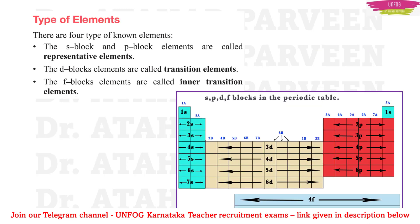As discussed in a basic chemistry class on the periodic table, there are four types of known elements: s, p, d, and f block elements. The s block and p block elements are called representative elements. The d block elements are called transition elements, and f block elements are called inner transition elements. In this class we are discussing transition elements and inner transition elements.